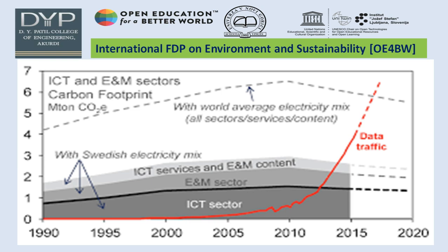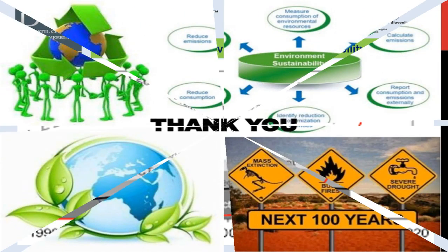A graph shows the information and communication technology and emerging modeling sector. Carbon footprint data from the 1990s to 2020s shows drastic changes. ICT sectors contribute to greenhouse gas and carbon footprint CO2 emissions.